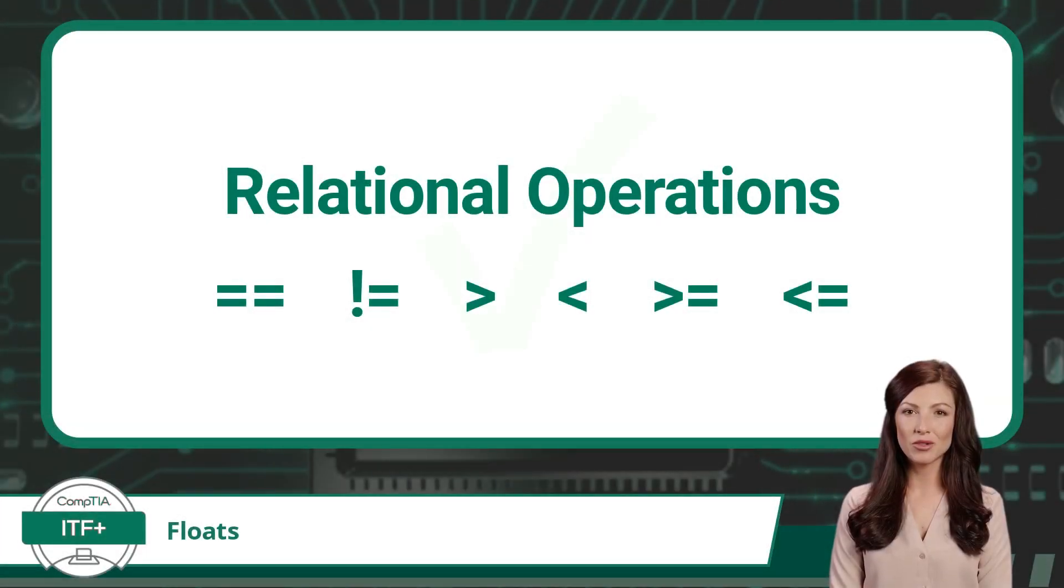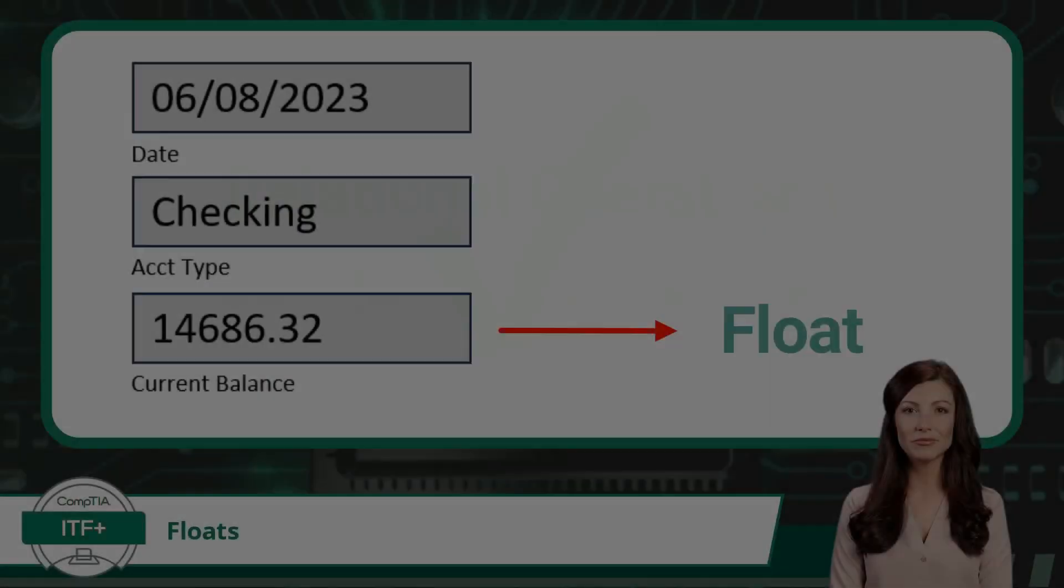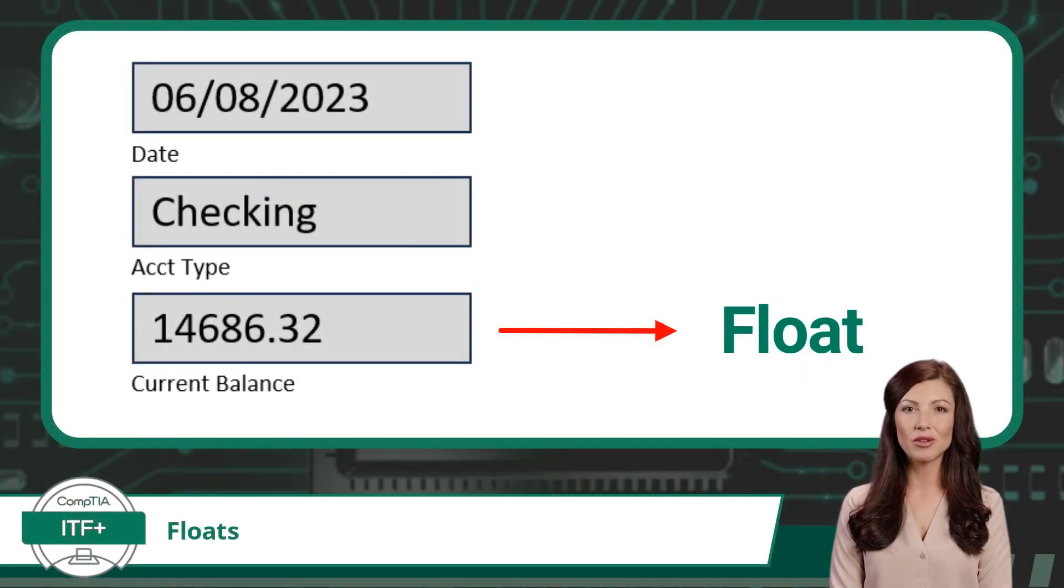The float data type also supports relational operations. A very common use for the float data type is currency or monetary values. The example here is using the float data type to keep track of an account balance. Can you think of any other uses for the float data type?